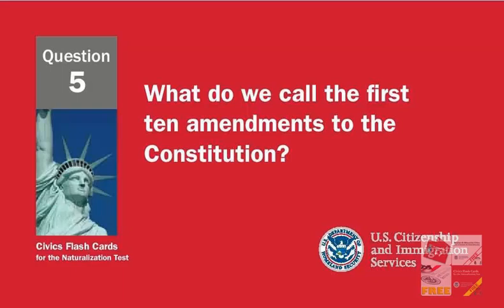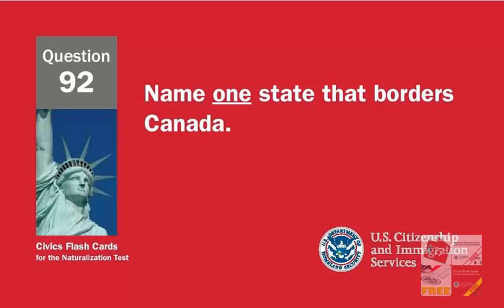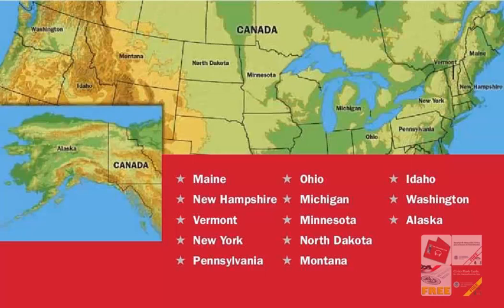What do we call the first ten amendments to the Constitution? The Bill of Rights. Name one state that borders Canada. Maine. New Hampshire. Vermont. New York. Pennsylvania. Ohio. Michigan. Minnesota.